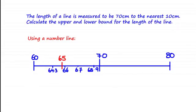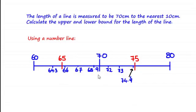Looking at values greater than 70 that would round down to 70 to the nearest 10: 72, 73, and even 74.9 recurring would all round down to 70. However, 75 would round up to 80 centimetres, so 75 is excluded from our set of possible values. The range of possible values falls within the highlighted region, excluding 75, because 75 rounds up to 80 to the nearest 10 centimetres.